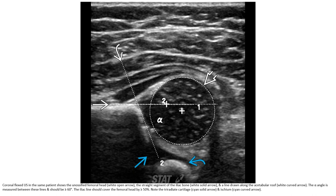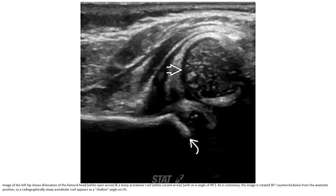Note the triangular cartilage and soft tissue. The image of the left hip shows a dislocated femoral head and a steep, dysplastic acetabular roof where the alpha angle is 40 degrees — indicating dysplasia. The image is rotated 90 degrees counterclockwise from the anatomic position, so a radiographically steep and shallow acetabulum will appear with a shallow alpha angle on ultrasound.